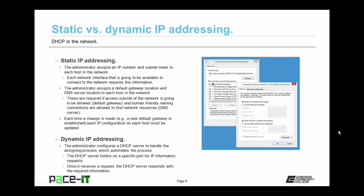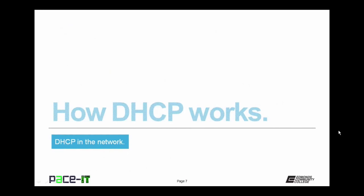With dynamic IP addressing, the administrator configures a DHCP server to handle the assignment process, which automates the process and eases management. The DHCP server listens on a specific port for IP information requests. Once it receives a request, the DHCP server responds with the required information.